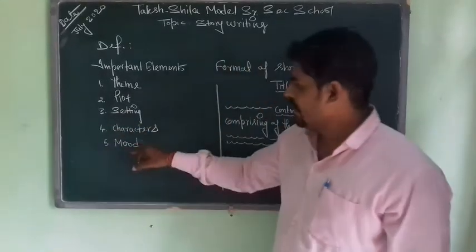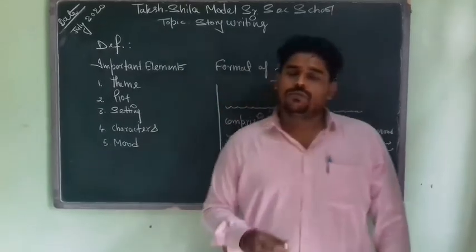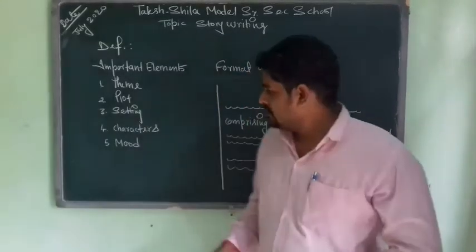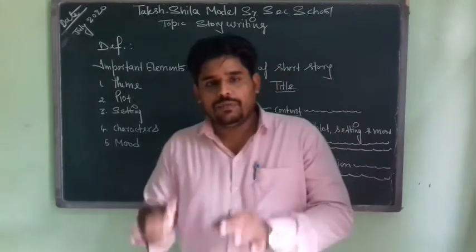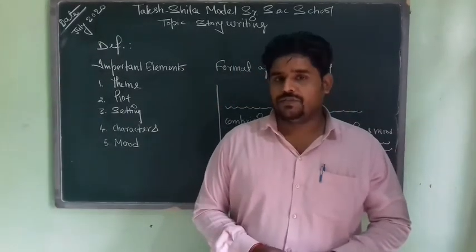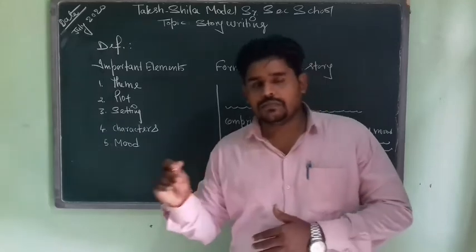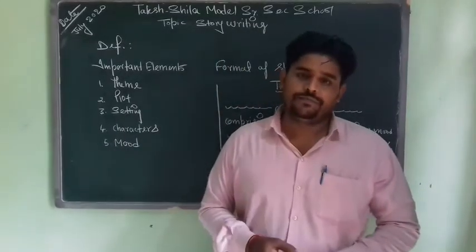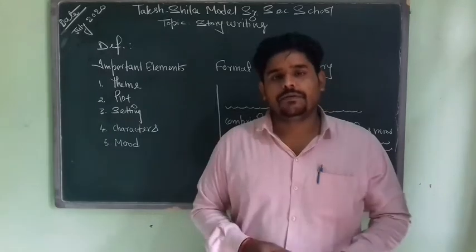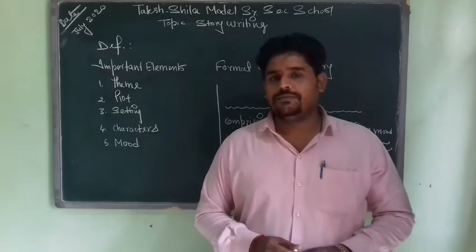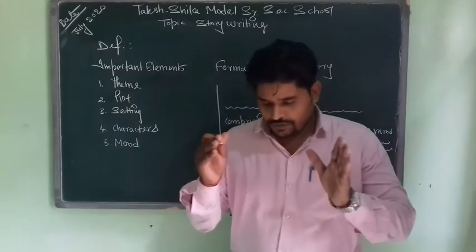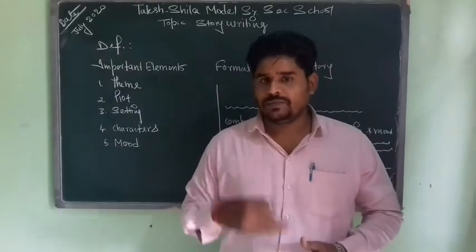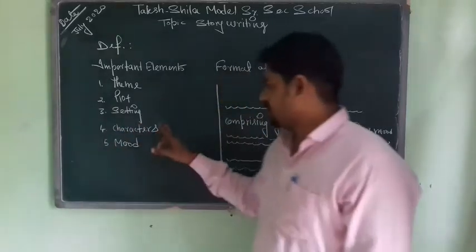Now we have point number four. When writing a story, we write about people, animals, or other living creatures. These animals, human beings, or other living creatures are called the characters of the story. We must make a good judgment of the characters while we sit down to write a story. We should choose proper characters — characters that might be liked by people. Characters is also an important element of story writing.